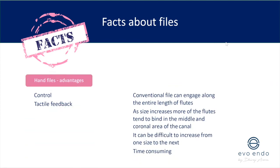The advantages of hand files are that they give you more control over your preparation and tactile feedback. The disadvantage is that conventional ISO files can engage along the entire length of their flutes, and as size increases more of the flutes bind in the coronal area of the canal. You may need to carry out more effective coronal flaring prior to introducing files deeper within the root canal system.